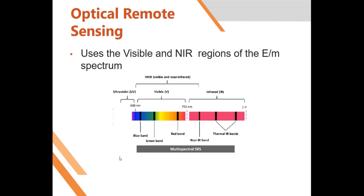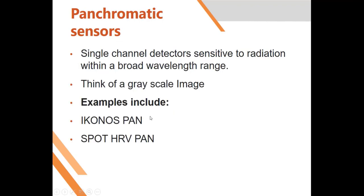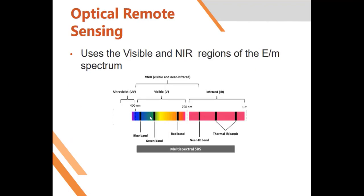Before I close, I want to look at optical remote sensing. The electromagnetic spectrum is a representation of energy levels, and optical remote sensing deals specifically with remote sensing that takes place in the visible and near-infrared regions of the electromagnetic spectrum, as shown on the image here.